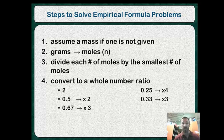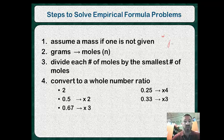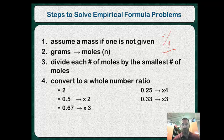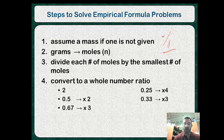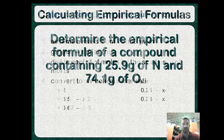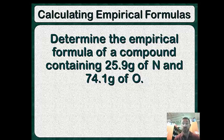Let's start our first problem. This is a review — you should already have this in your notes. This is how to solve empirical formula problems. Step one: assume a mass; if percentages are given, assume 100 grams. Step two: change grams to moles. Step three: divide each number of moles by the smallest number of moles. Last, if the numbers are not whole numbers, multiply to make them whole numbers.